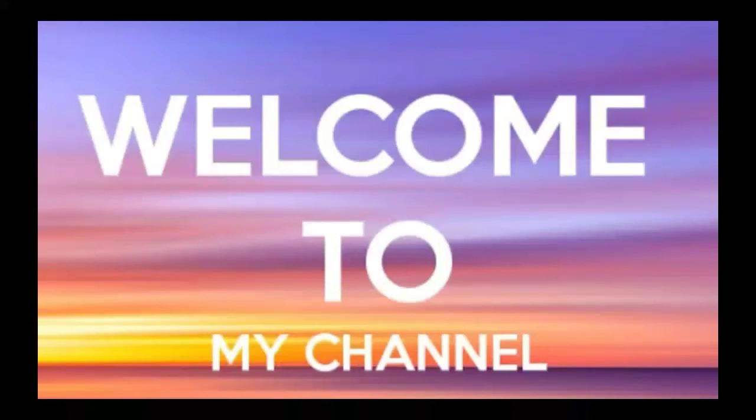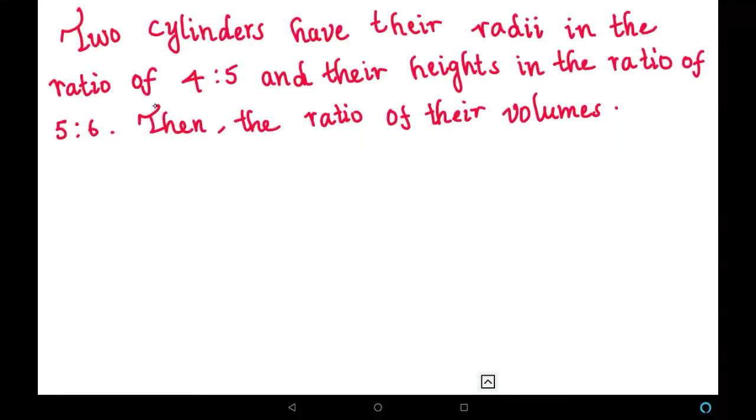Friends, welcome to my channel. We are going to solve a new problem. Two cylinders have their radii in the ratio of 4 is to 5 and their heights in the ratio of 5 is to 6. Then the ratio of their volumes.